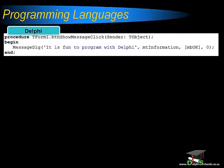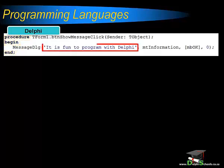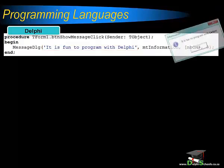Here you can see a code snippet written in Delphi. For now, you don't need to understand everything that you see — we will learn all about that in future lessons. What I want you to notice is the English words that I use, like the words procedure, begin and end. The code tells the compiler to display a message in a message box that reads, 'It is fun to program with Delphi.' When the compiler translates this code, it produces the following output.